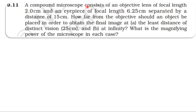A compound microscope consists of an objective of focal length 2 cm and an eyepiece of focal length 6.25 cm, separated by a distance of 15 cm. How far from the objective should an object be placed in order to obtain the final image at: first, the least distance of distinct vision 25 cm, and second, at infinity? What is the magnifying power of the microscope in each case?